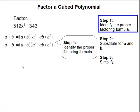Step one, identify the proper factoring formula. There are two types of formulas that you can use, the sum of two cubes or the difference between two cubes. In this case, we have the difference between two cubes, so we're going to use the second formula.